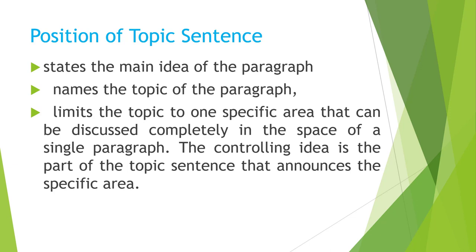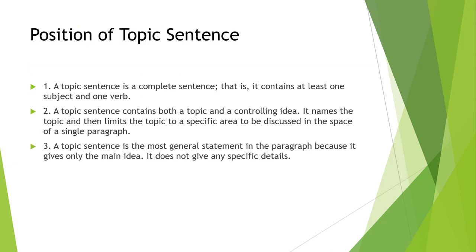Here are three important points to remember about a topic sentence. First, a topic sentence is a complete sentence — that is, it contains at least one subject and one verb. Second, a topic sentence contains both a topic and a controlling idea; it names the topic and then limits it to a specific area to be discussed in the space of a single paragraph. Third, a topic sentence is the most general statement in the paragraph because it gives only the main idea and does not give any specific details.